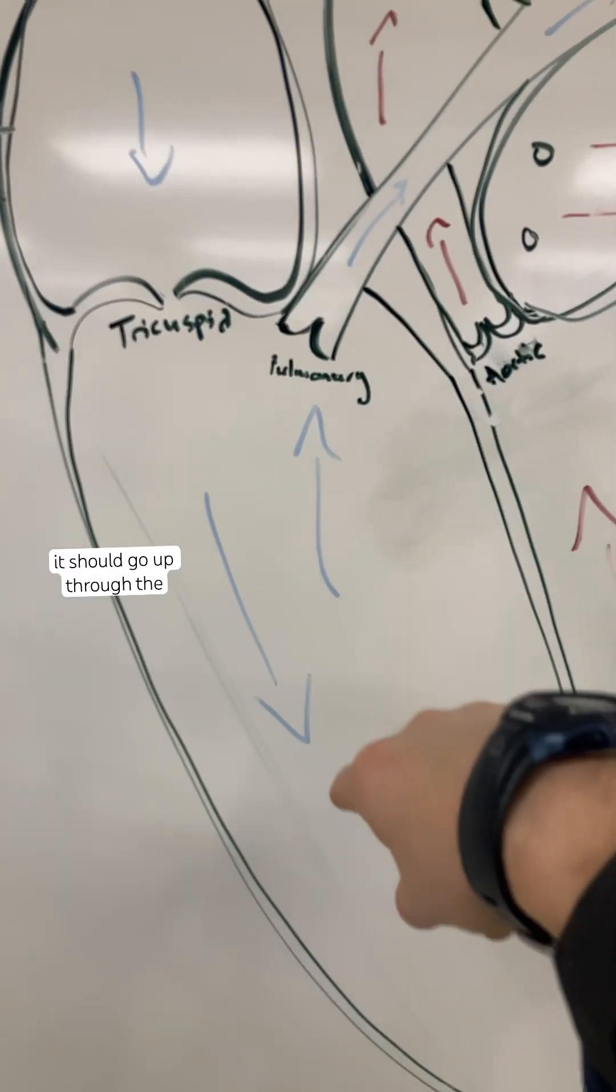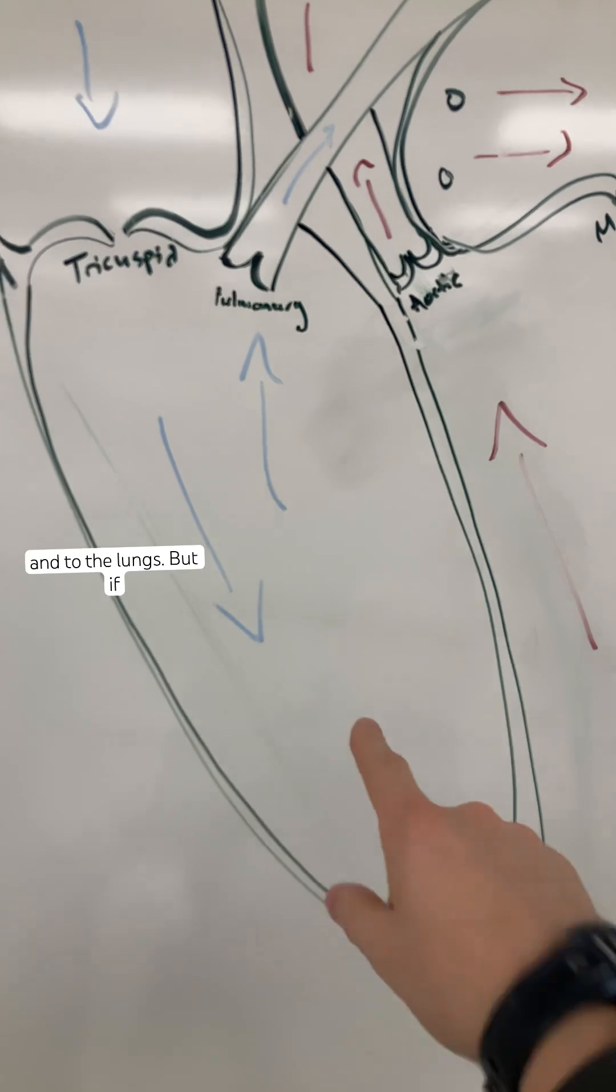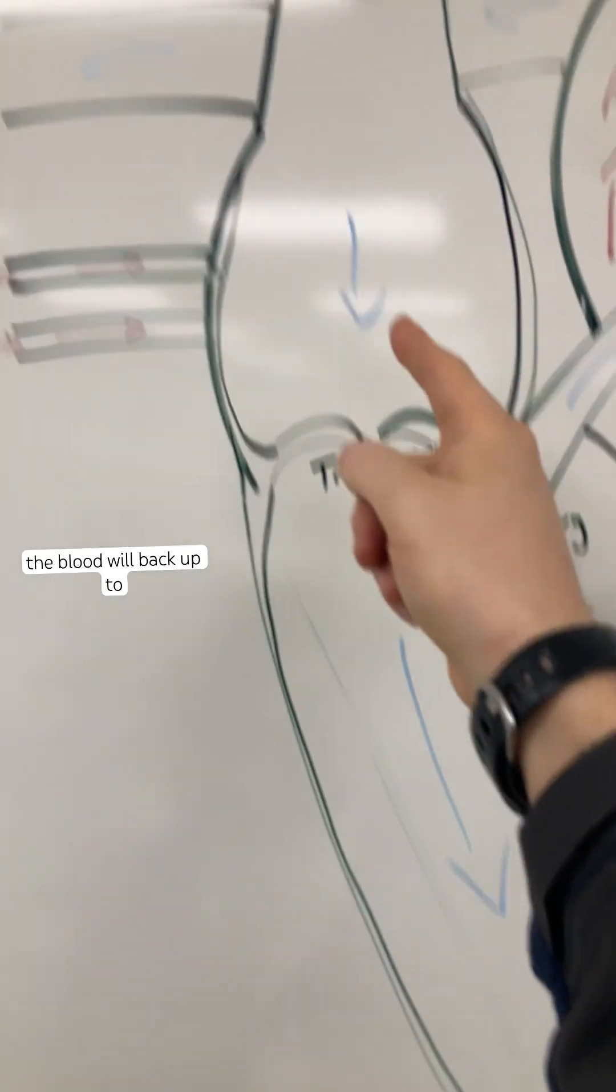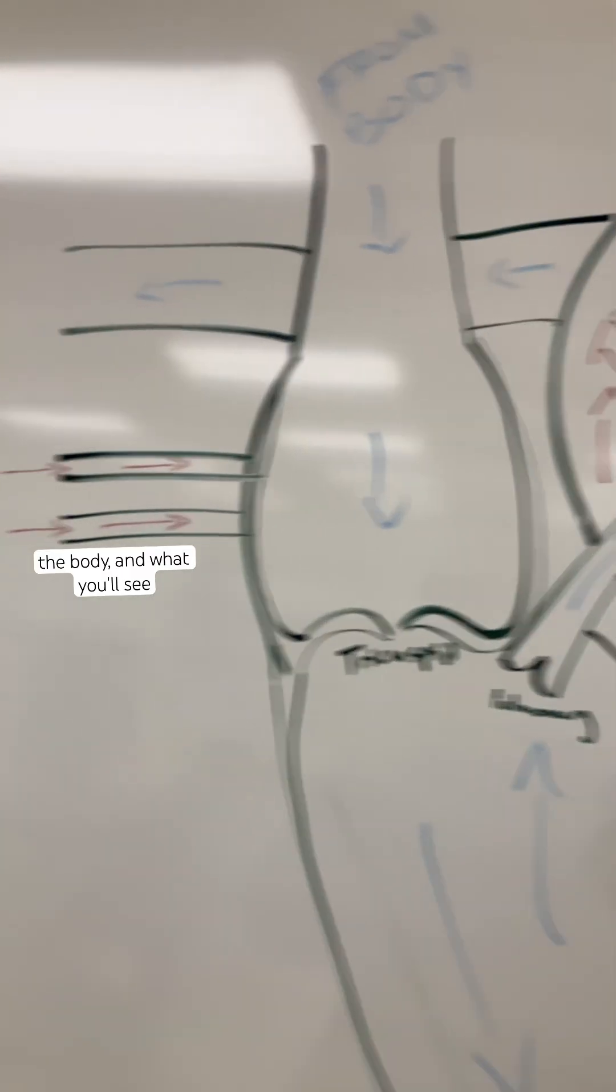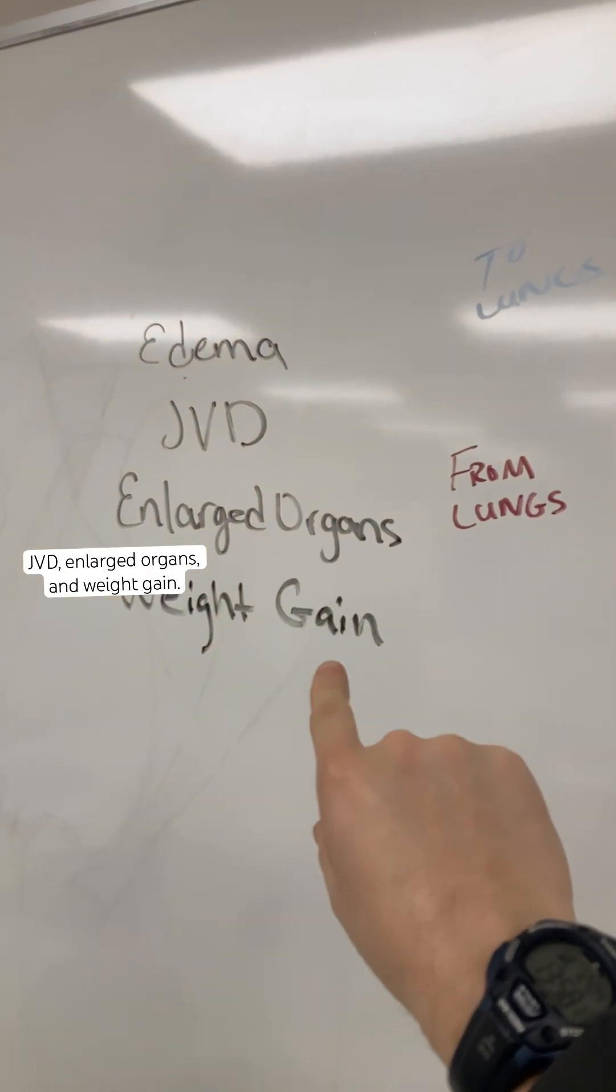Normally it should go up through the pulmonic valve into the pulmonary arteries and to the lungs. But if the right side is failing, then the blood will back up to the body, and what you'll see are some systemic effects like edema, JVD, enlarged organs, and weight gain.